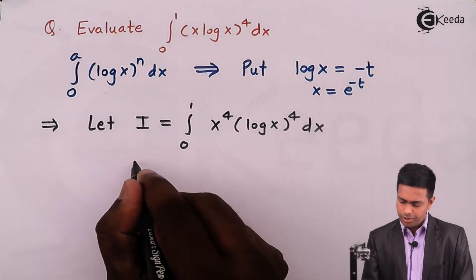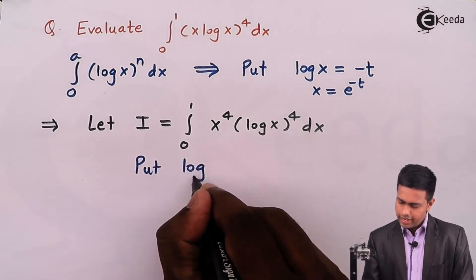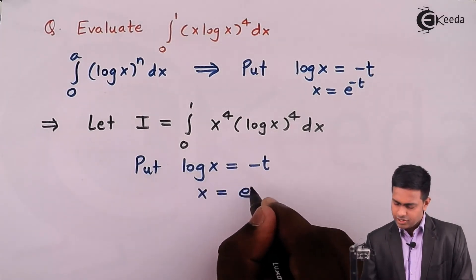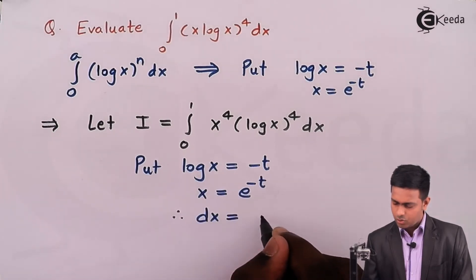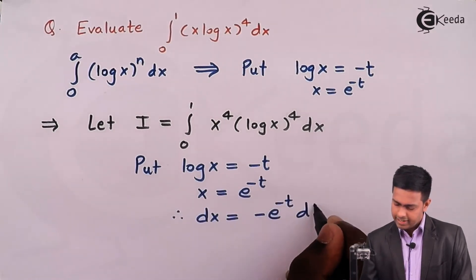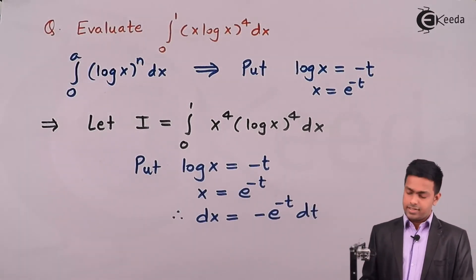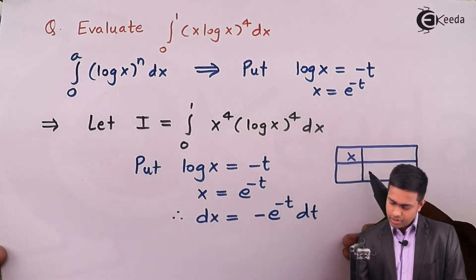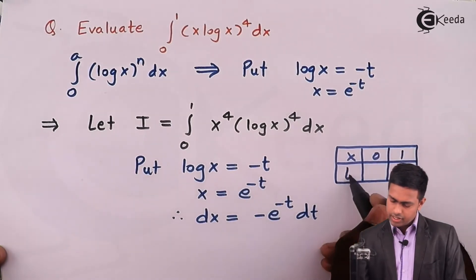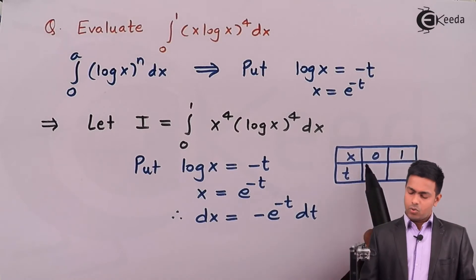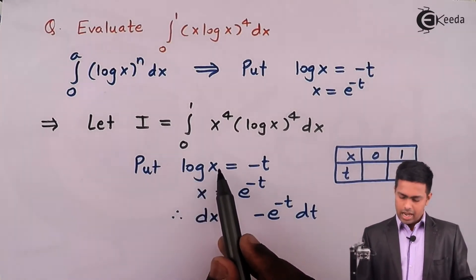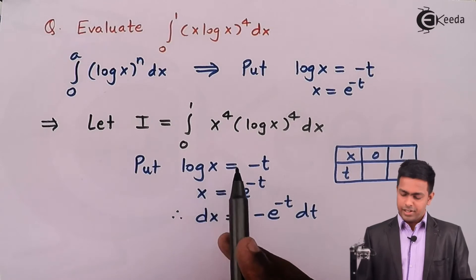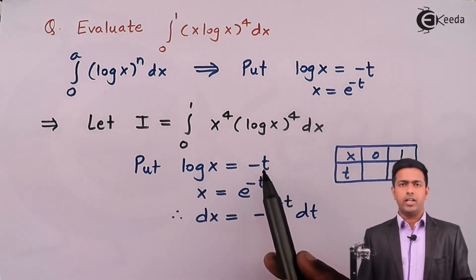Put log x = -t, so x = e^(-t), and therefore dx = -e^(-t) dt. Now let's find the new limits. For x going from 0 to 1: when x = 0, log 0 = -∞, so -∞ = -t which gives t = ∞. When x = 1, log 1 = 0, so t = 0.